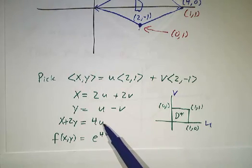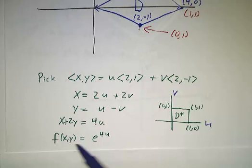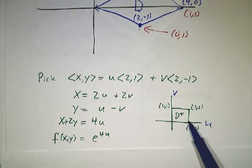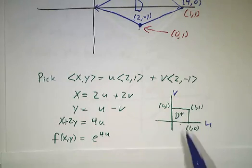And so our integrand was e to the x plus 2y, our integrand becomes e to the 4u. And the region of integration is the unit square.